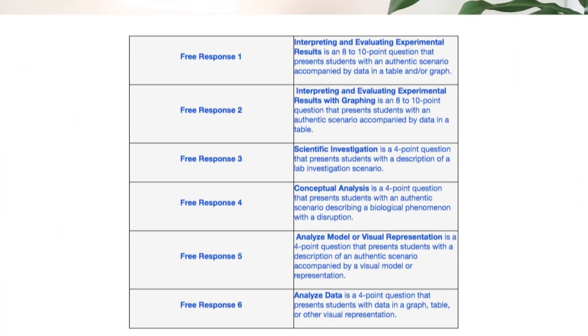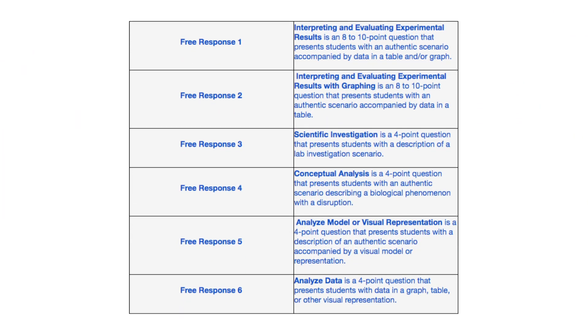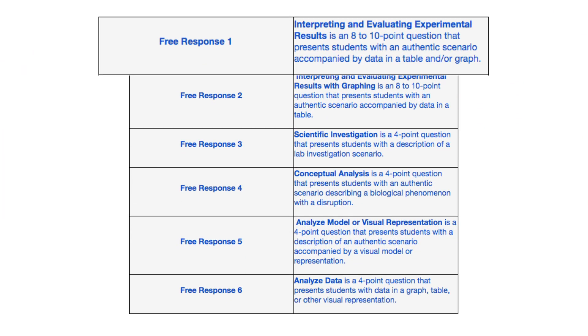The College Board specifies that successful students will be able to clearly connect a biological concept to a larger big idea while using designated science practices and skills. The following types of prompts can be expected on the biology AP exam's free response section. For instance, interpreting and evaluating experimental results — an eight to ten point question that presents students with an authentic scenario accompanied by data in a table or graph, which they then need to interpret to make some sort of conclusion about the experiment.